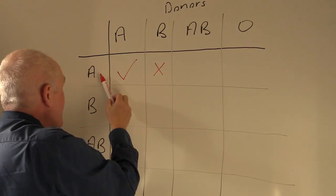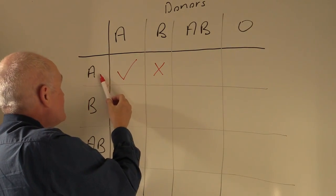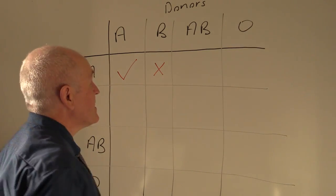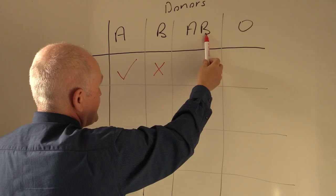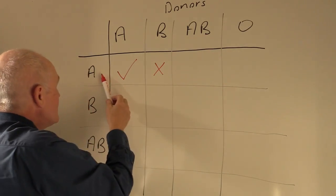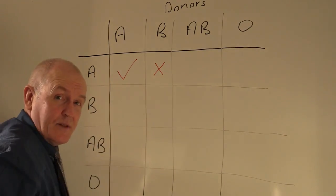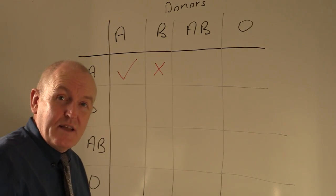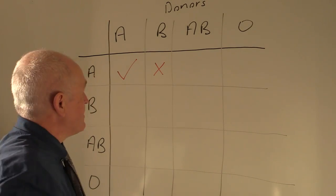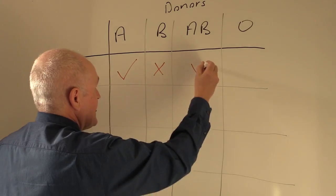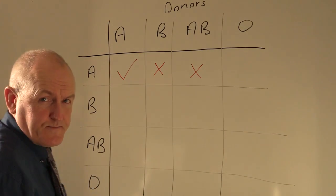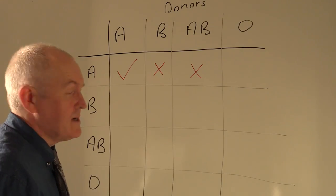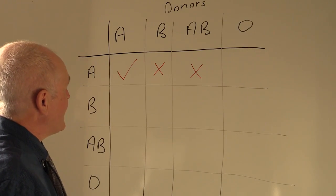Now AB contains A and B antigens, and in the A blood there are going to be B antibodies. So in this case the B antigens will be agglutinated by the B antibodies in the group A recipient plasma. Clearly that is not allowed — it will give a hemolytic mismatch reaction.